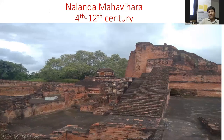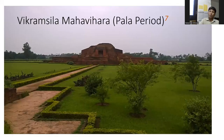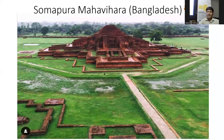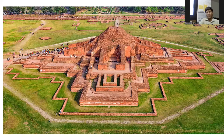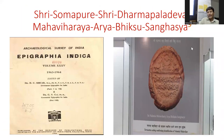During the Pala period, this is the Nalanda Mahavihara — the present day ruins of ancient Nalanda Mahavihara. This is Vikramshila Mahavihara, which also flourished during the Pala period. This is Somapura Mahavihara, which flourished in the Pala period and is situated in present day Bangladesh. At Somapura Mahavihara, an inscription was found similar to the Nalanda inscription, reading: Sri Somapura Mahavihara Sri Dharmapaladeva Mahavihara Aryabhiksusanghasya — indicating it was established by Pala ruler Dharmapala.